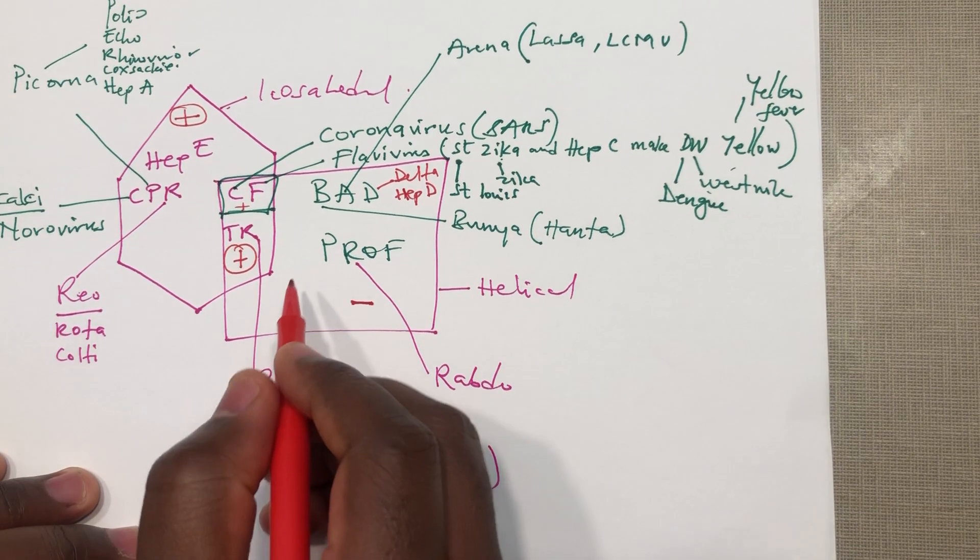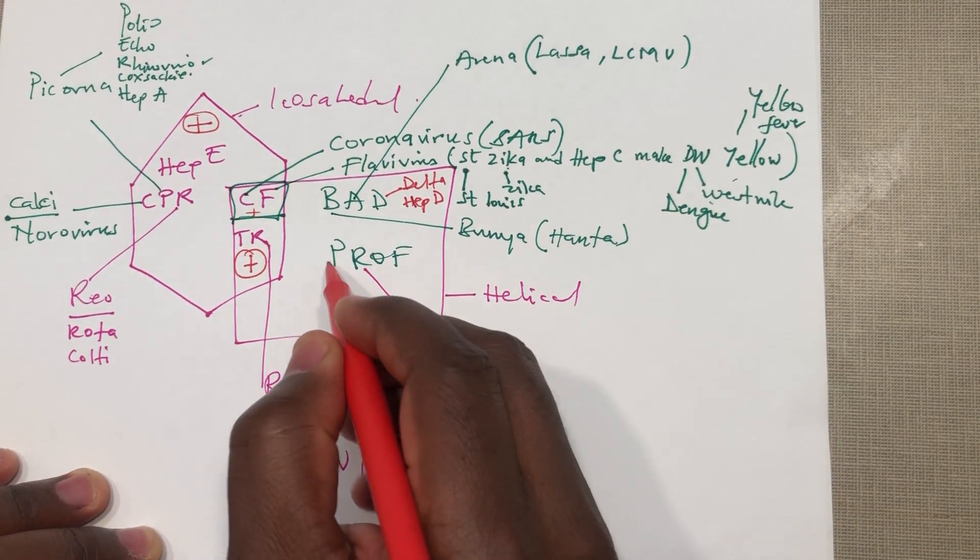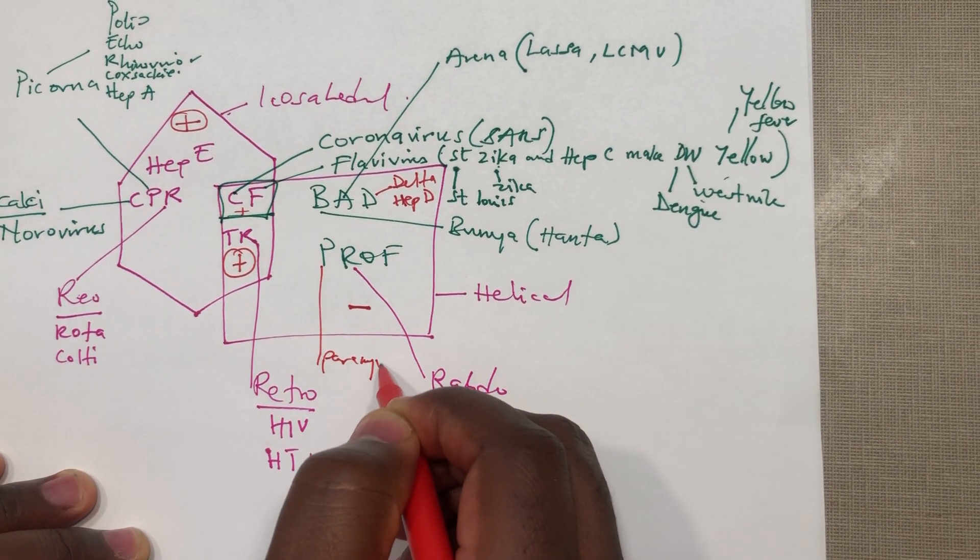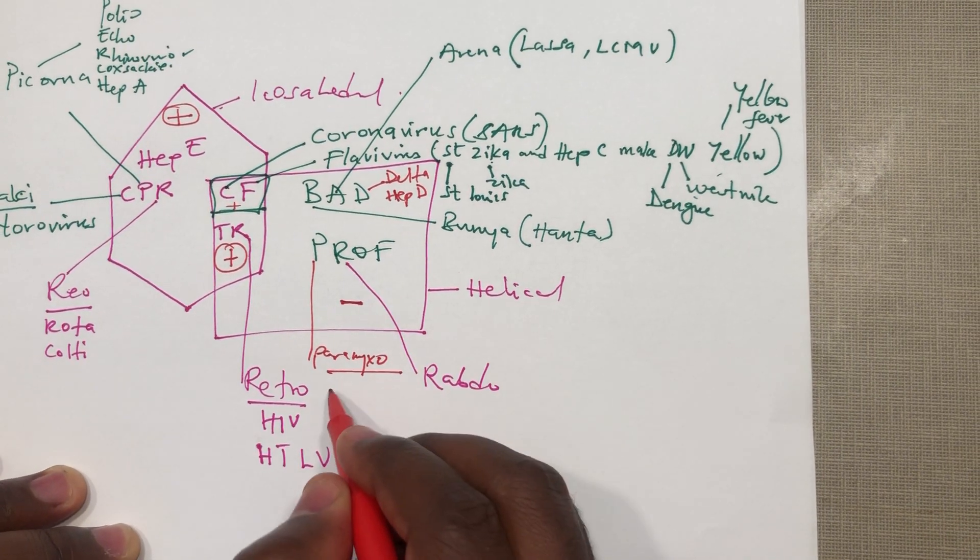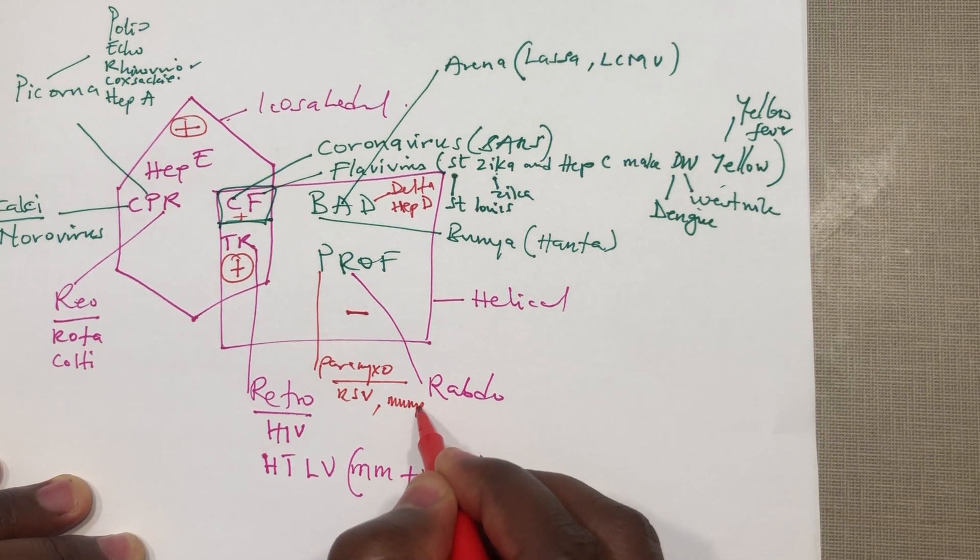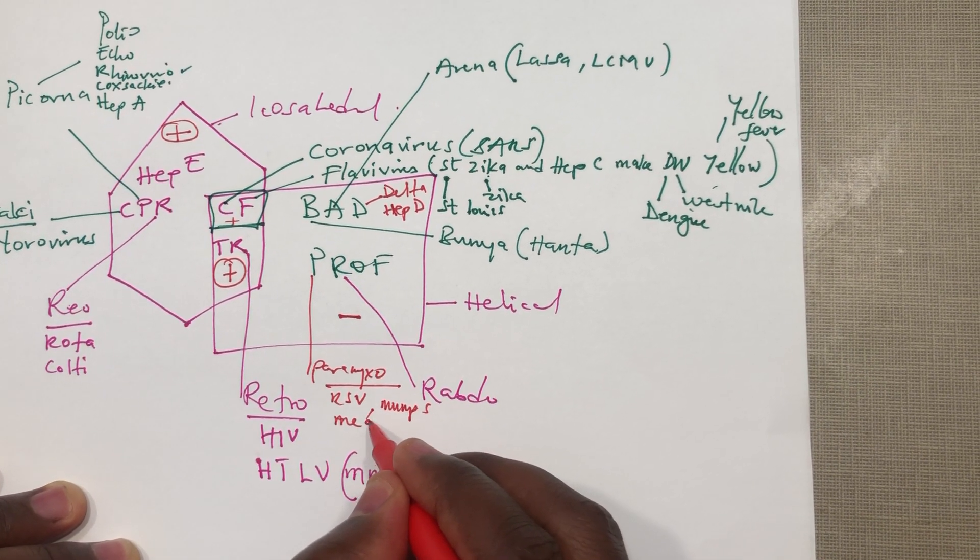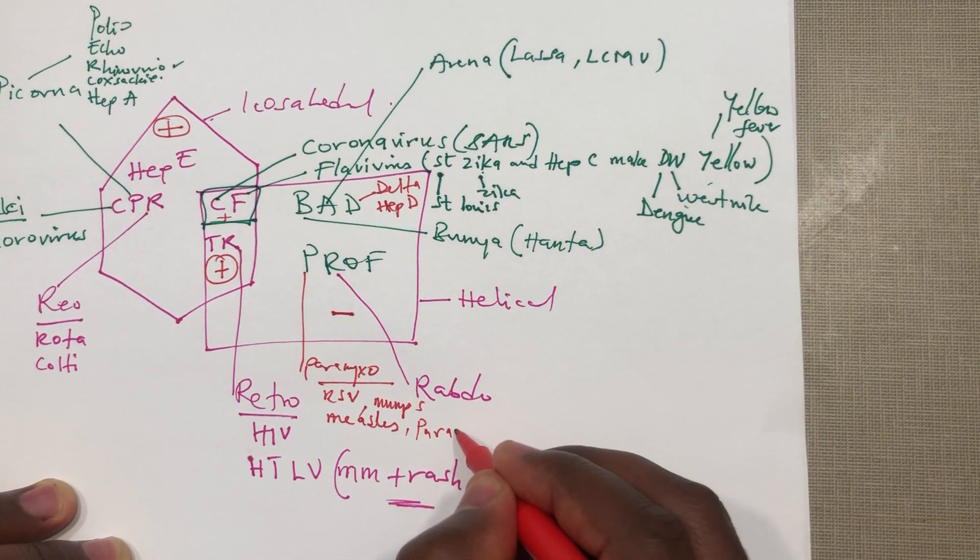Now let's come to the last one, the prof. With the prof we have the paramyxovirus. Under the paramyxovirus we have the RSV, mumps, measles, and the parainfluenza virus.